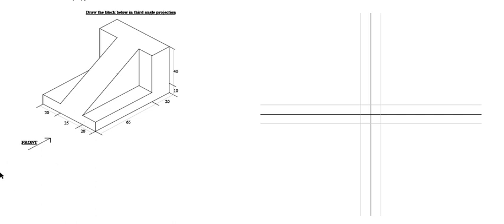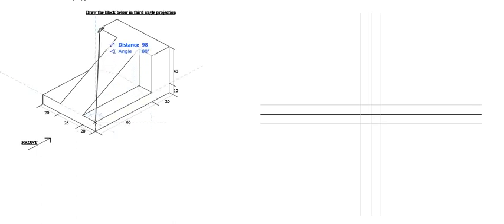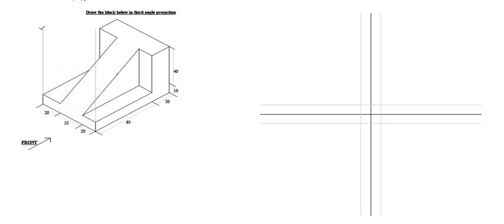Normally what I like to do is start by drawing the front elevation. The front elevation is basically what you are going to see when you are on this side facing this side. Let me start by extending this line up and showing you what you are going to be able to see from the front elevation.